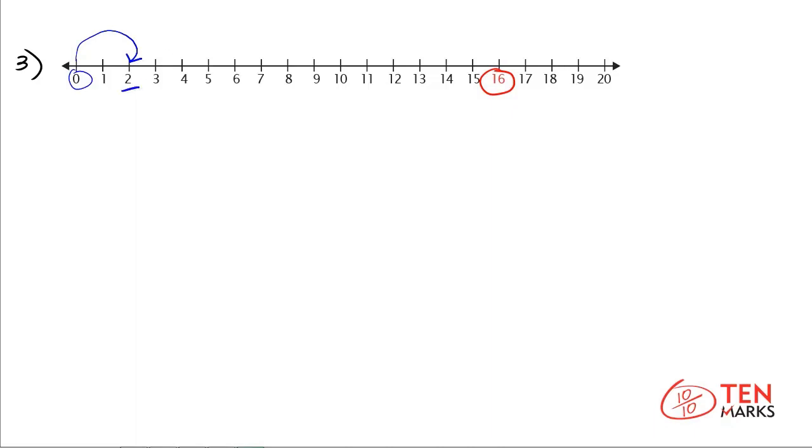And I'm going to finish skip counting by two for you. Here I've finished skip counting by two and I notice that when I skip count by twos I do land on the number 16. Which means that the number 16 is even.